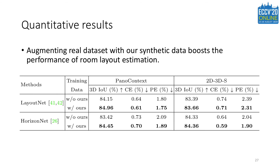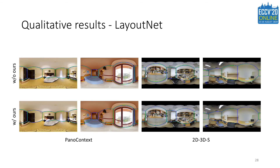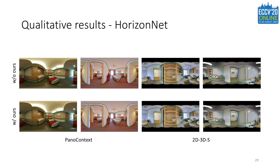The experimental results show that augmenting the real dataset with our synthetic data boosts the performance of both networks. In qualitative results of LayoutNet, training with our dataset leads to more accurate estimations. Similarly, for HorizonNet, the network generates better layout estimations when training on both synthetic data and real images.